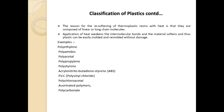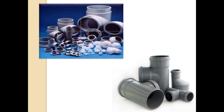Examples of thermoplastic materials include polyethylene, polyamide, polyacetal, polypropylene, polystyrene, PVC, and polycarbonate. Such N number of examples can be given for materials which can be recycled again and again.